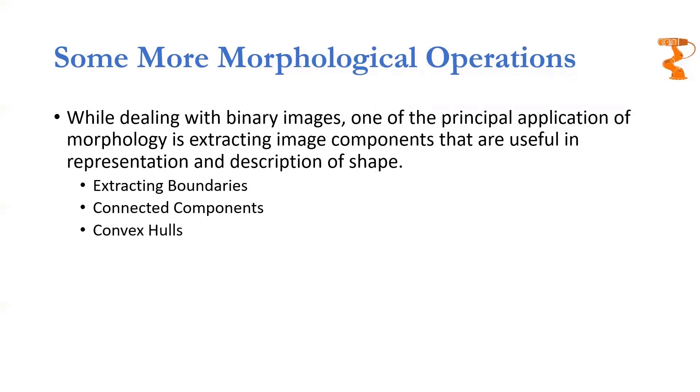We can find convex hulls, which are very important for object tracking and recognition. We can figure out the skeleton of the object, which is important to establish the shape and form of the object we're trying to identify.